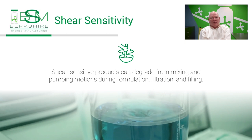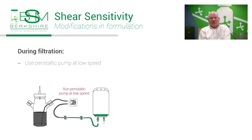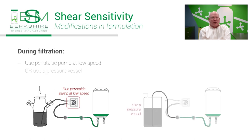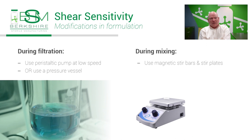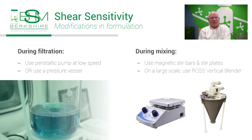Finally, we get to the last common drug product sensitivity: shear sensitivity. Clients with shear-sensitive products are often concerned that mixing and pumping the solution can destroy or degrade their drug substance. We use peristaltic pumps to move the solution through the filter — these pumps provide a gentle pumping action at low speeds. We can also use pressure filtration on shear-sensitive products. We use magnetic stir bars and stir plates in the formulation to mix APIs and excipients. On a large scale, we use the Ross vertical blender, which is designed for reliable, gentle mixing of friable solids, abrasive materials, and shear-sensitive products.